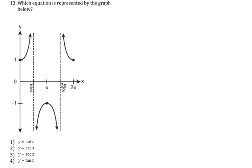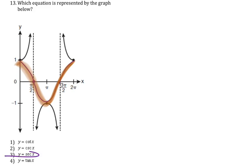Number 13: again we have vertical asymptotes, so the original function would be zero there. Flipping about 1 and -1 to get the reciprocal, the resulting curve looks like cosine. The reciprocal of cosine is secant, so choice 3 is the answer.